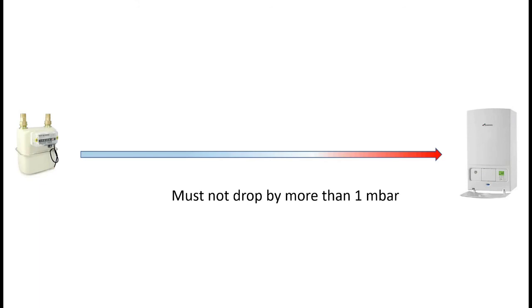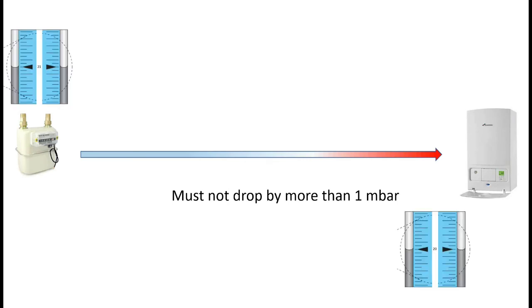Now the law states that you must not have a drop of more than one millibar between the metre and the appliance. So if the pressure at the metre is 21 millibars, the minimum pressure you're allowed at the appliance is 20 millibars. Correct pipe sizing will ensure that you get no more of a drop than one millibar.